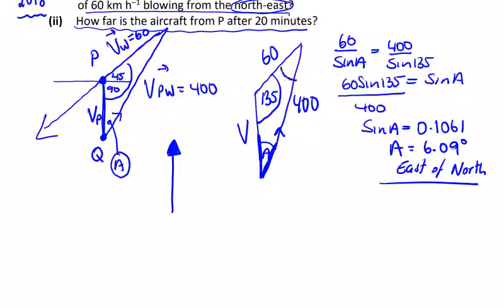That's the one opposite V. Let's do that first. B is equal to 180 minus 135 minus 6.09, which is 45 minus 6.09, which is 38.91 degrees.